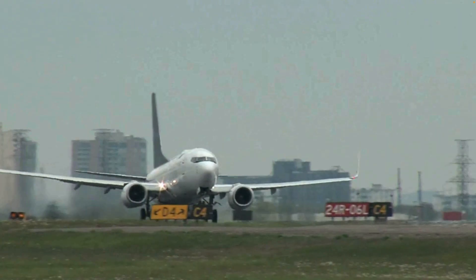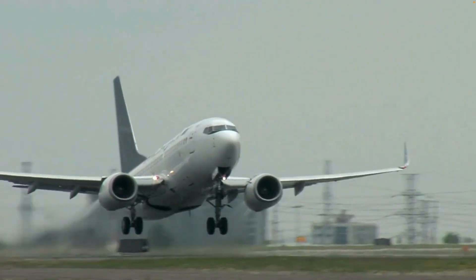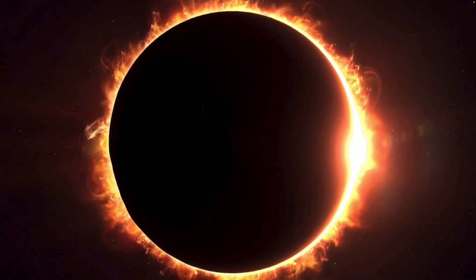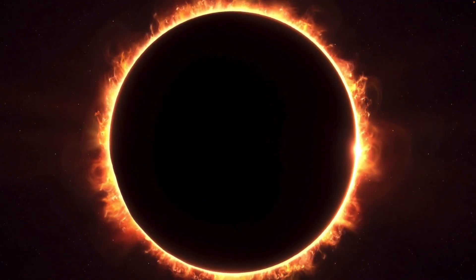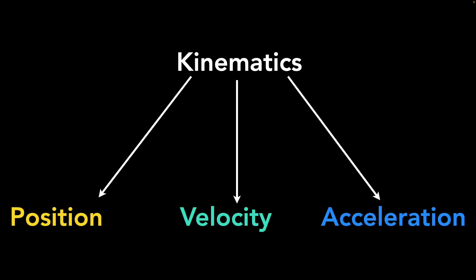Humanity is incredible at prediction. We can figure out the exact velocity an airplane needs to take off, and we can even precisely time solar eclipses years in advance. But how do we do that? One of the most fundamental tools is kinematics — they let us analyze positions, velocities, and accelerations, the building blocks of motion. Let's find out.